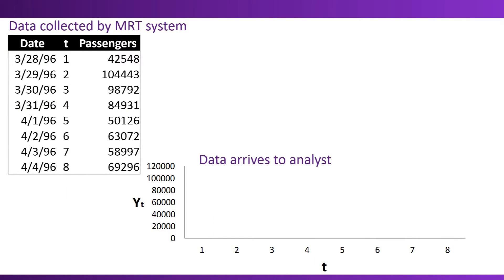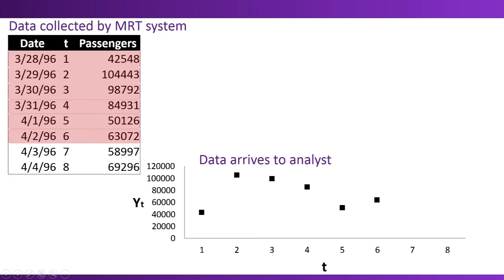In the table here, we're going to look at the data as it is collected by the MRT system. In the chart at the bottom, we're going to see how the data arrives to the analyst's computer. For example, on March 28, 1996, the data are collected by the MRT system and immediately show up in the file for the analyst to analyze. The next day, March 29, the system collects the next data on the number of passengers, and that data arrives again at the analyst's computer on day two. Every day, as the data is collected by the MRT system, it appears in the analyst's data file.